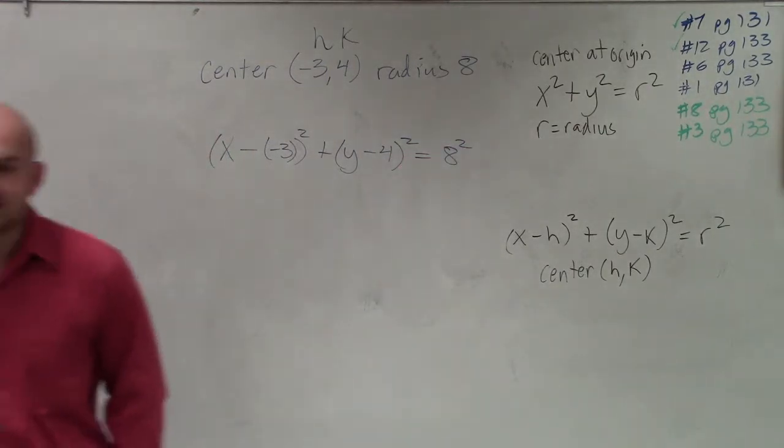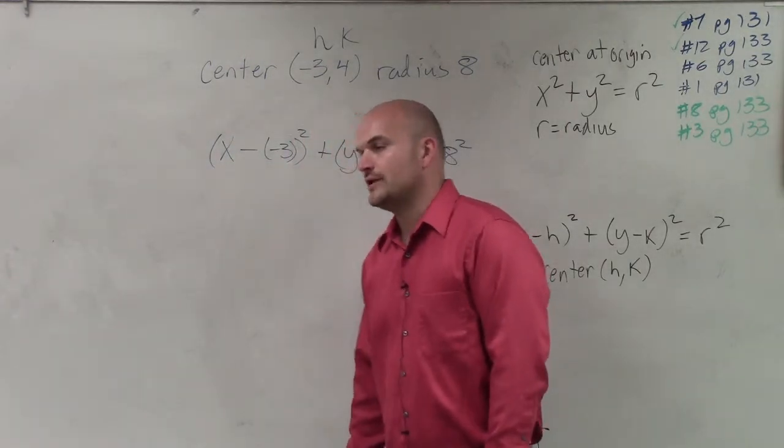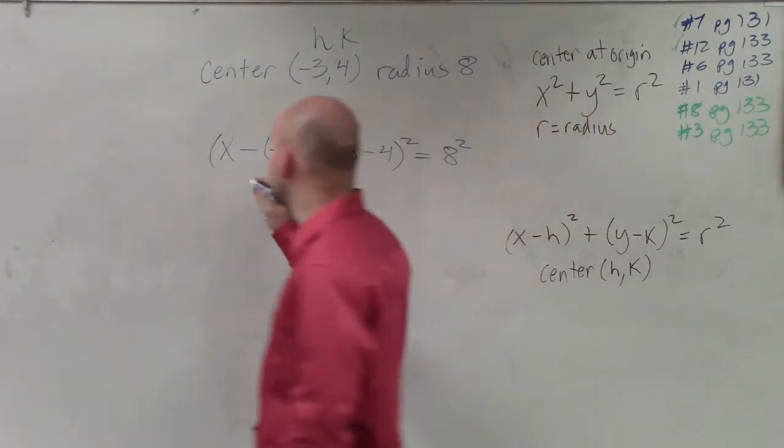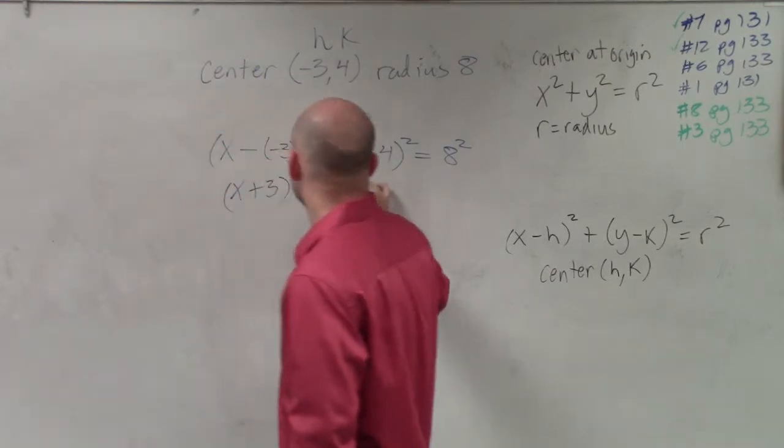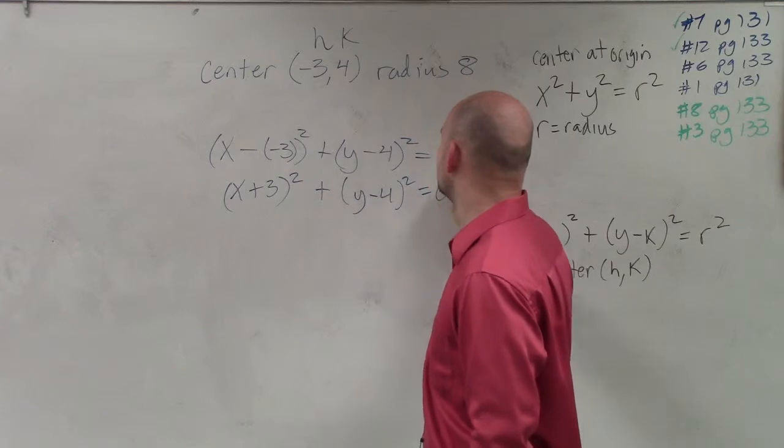So by using the idea of subtracting a negative, x minus a negative 3 is now going to become x plus 3 squared plus y minus 4 squared equals 64.